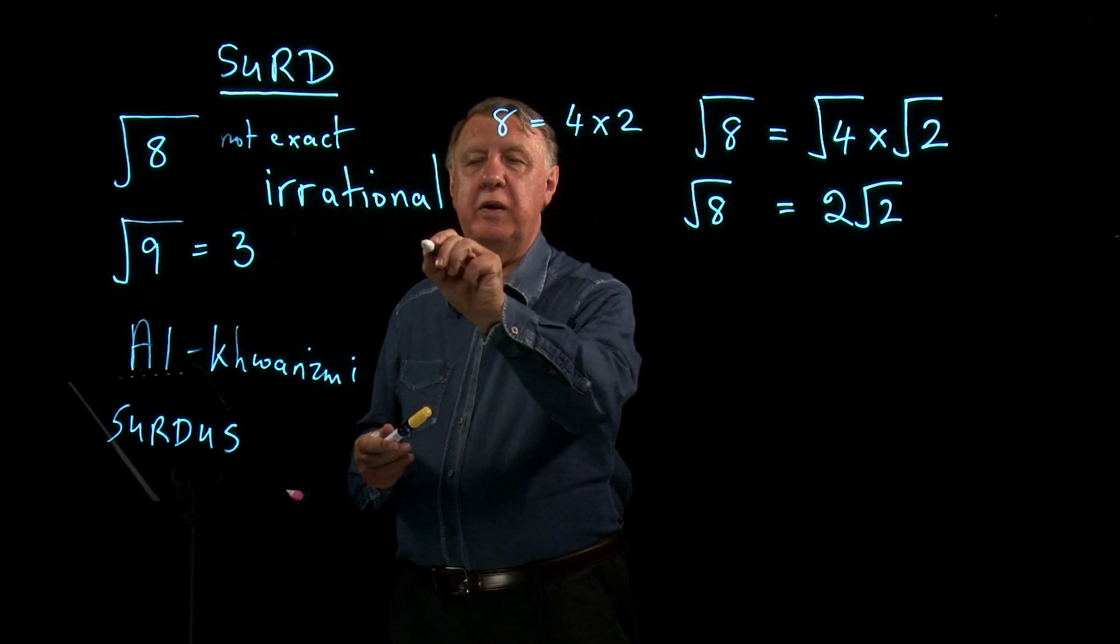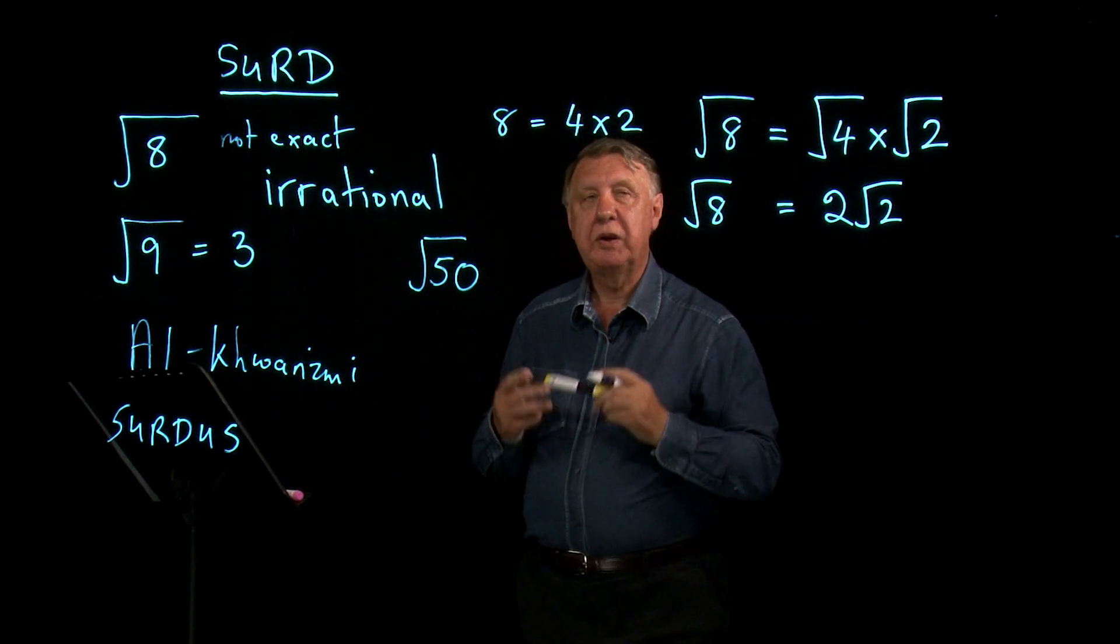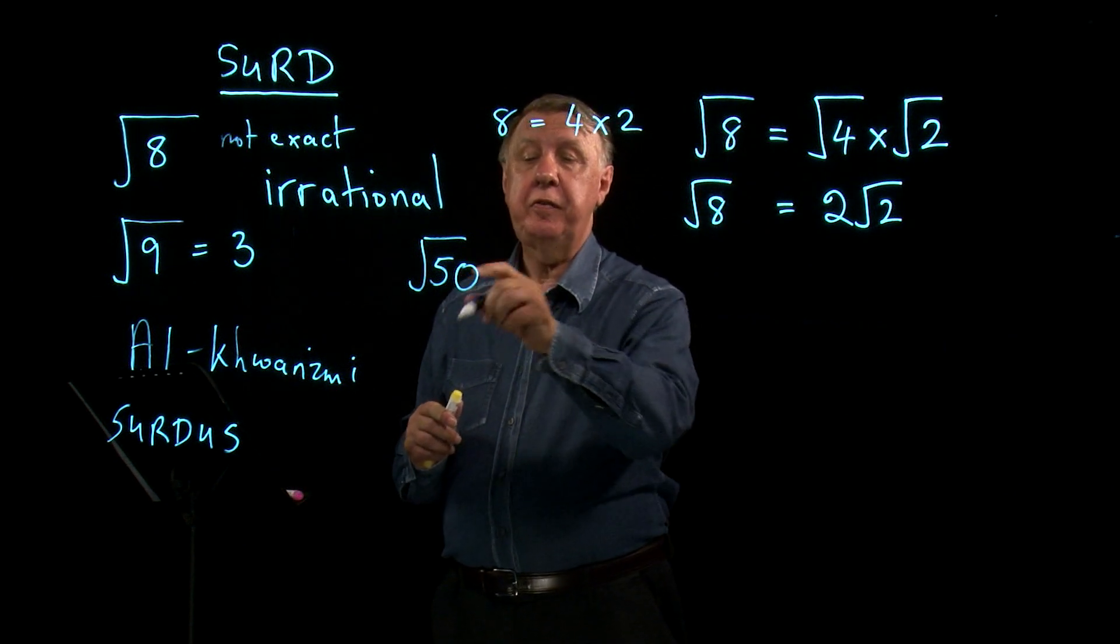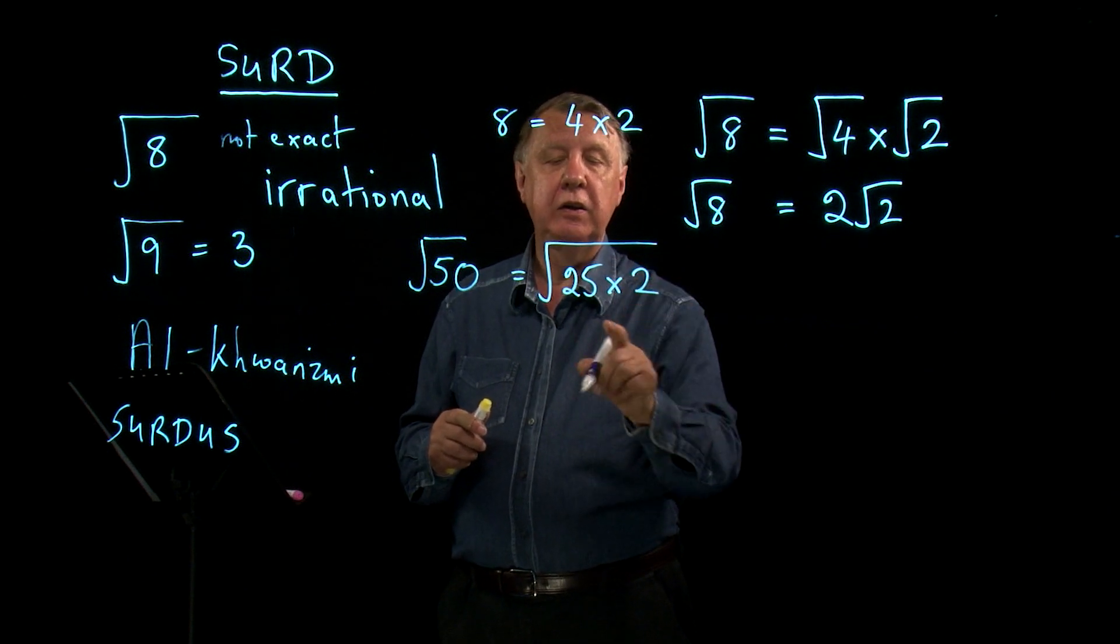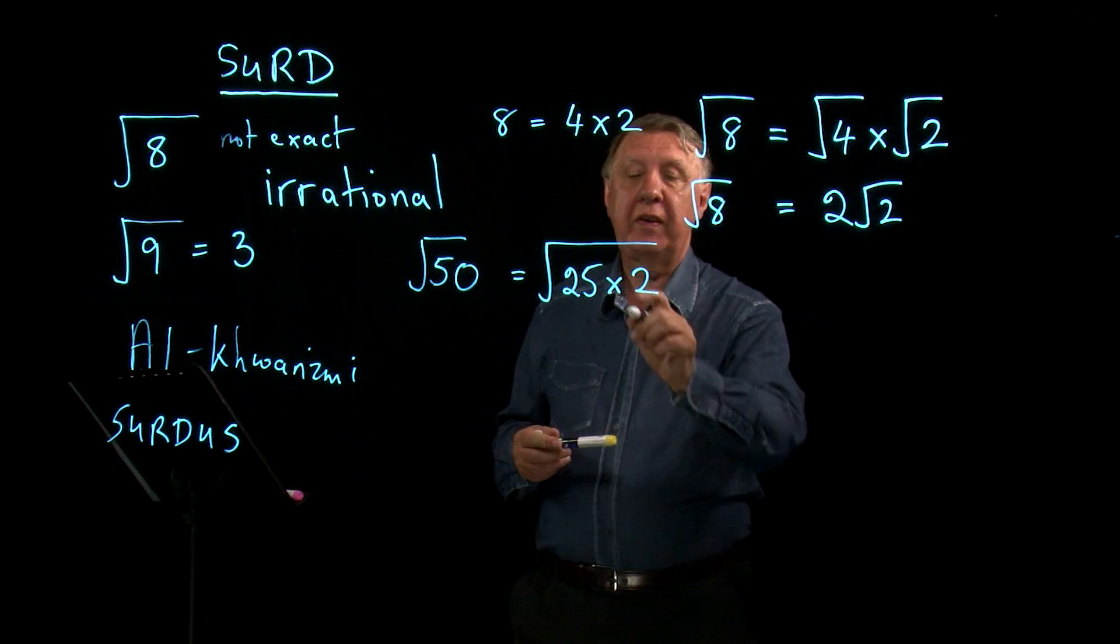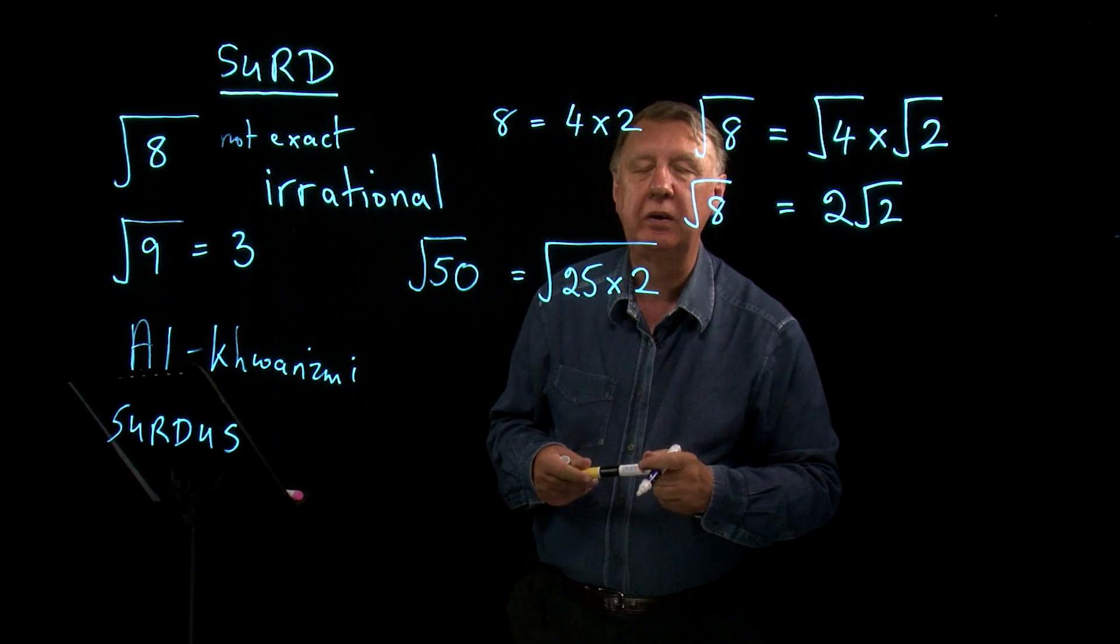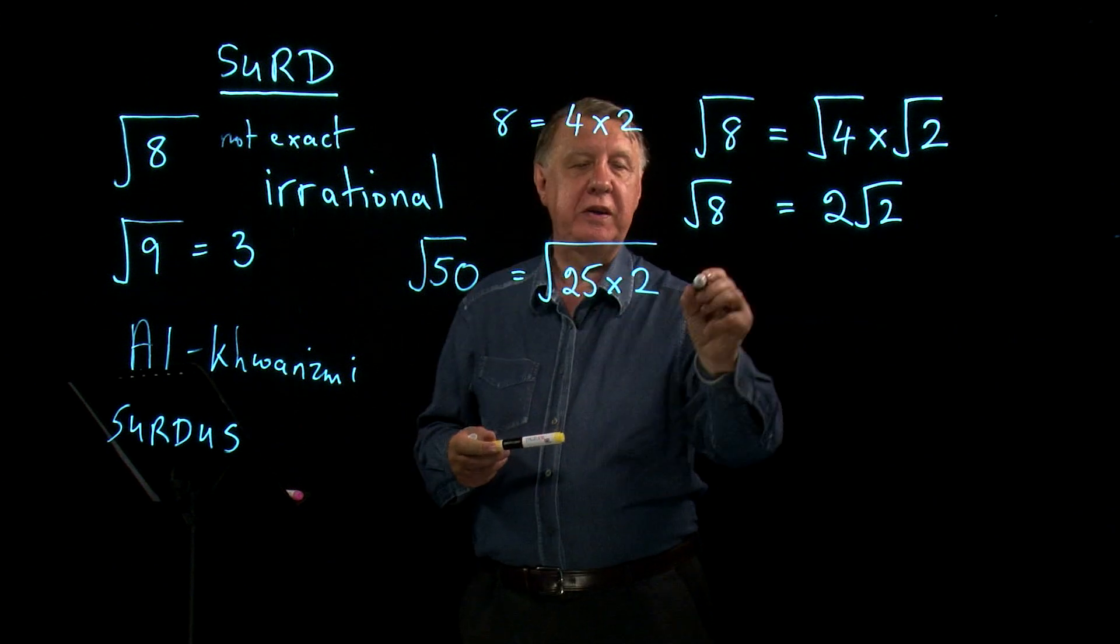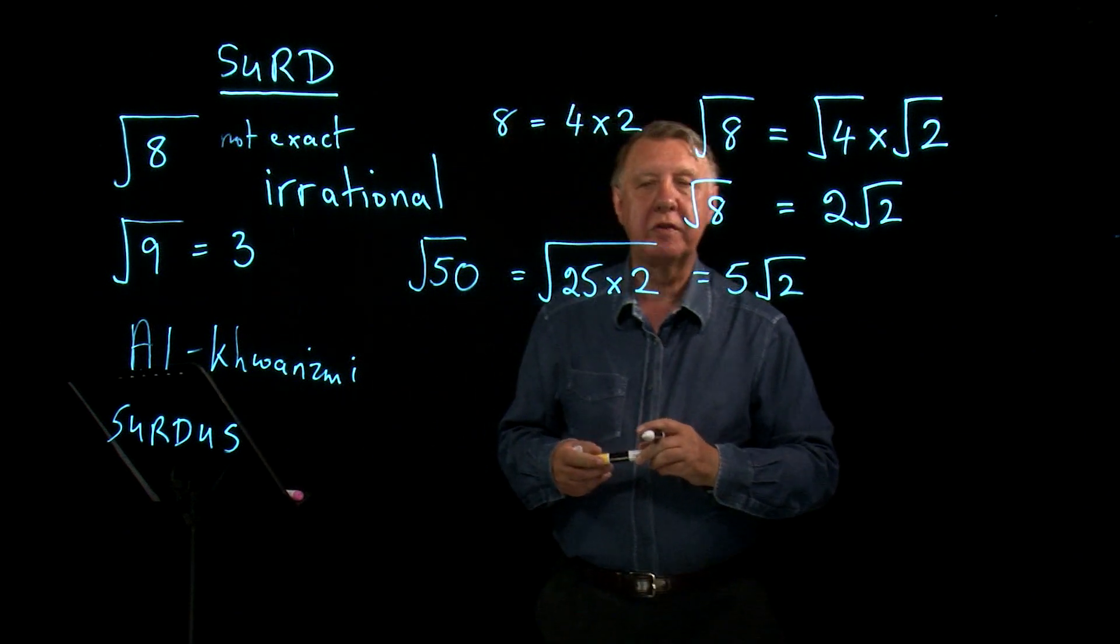What about the square root of 50? Again, it's not exact. We know what it stands for. We don't need to write it out as a decimal. Why? Well, because 50 is, of course, 25 times 2. So notice I'm always trying to find a square number, the largest square number, so that that square number multiplied by something else that isn't a square number gives me the number inside the square root. The square root of 25 is 5, so this time I have 5 times the square root of 2.